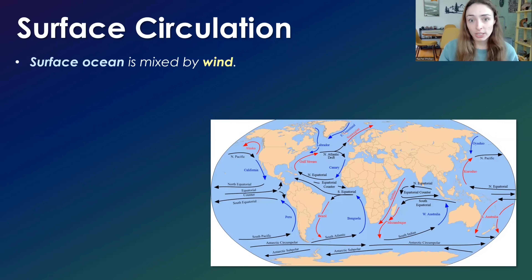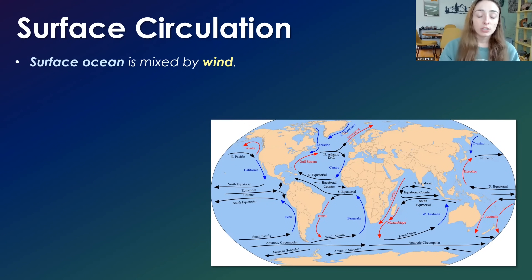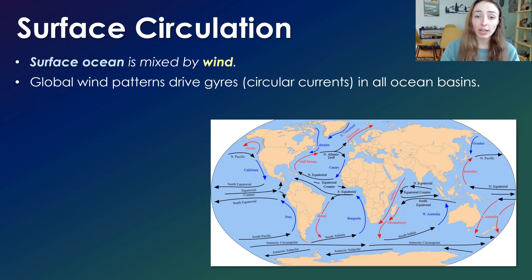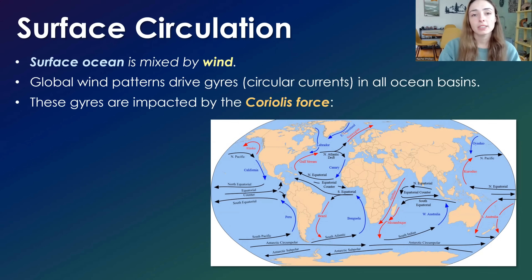First, I'll talk about surface ocean circulation and how it works, and then we'll move on to deep ocean circulation because they're pretty different. The circulation of the surface ocean is driven mainly by wind. Global wind patterns drive gyres, or circular rotating currents, in all of the major ocean basins. These gyres are impacted by the Coriolis force — Earth's rotation.